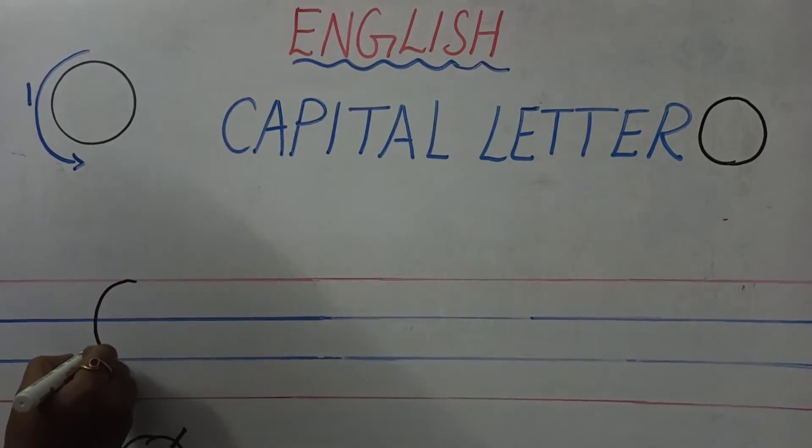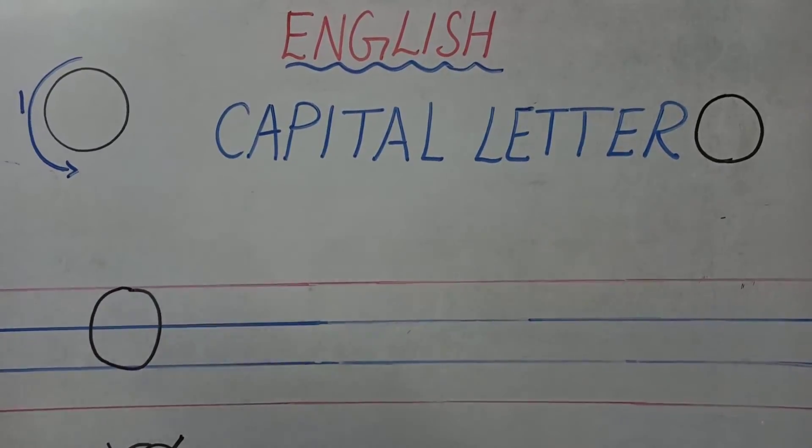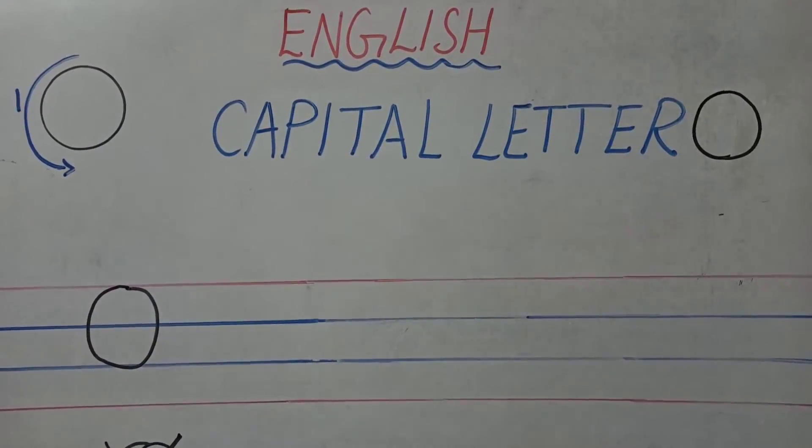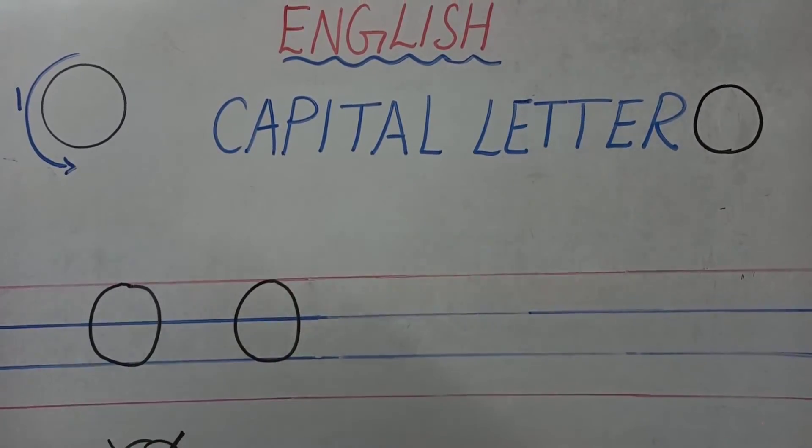Now make a curve and come to the same point. What is this letter called? Capital O. Capital letter O. This is called capital O.